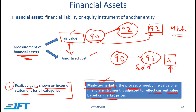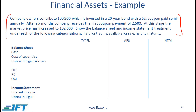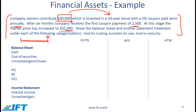Let's work through an example covering the different ways of measuring financial assets. Company owners contribute 100,000 which is invested in a 20-year bond with a 5% coupon paid semi-annually. After 6 months, the company receives the first coupon payment of 2,500. At this stage, the market price has increased to 102,000. We will show the balance sheet and income statement treatment under each categorization for this 6-month period.